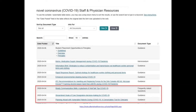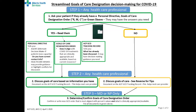Here is an example of a tool developed in Alberta. Simply ask your patient if they have a personal directive or goals of care designation in their green sleeve. If yes, review it — just because they have one doesn't mean they want it to be the same as before, so there is always room for a new conversation. The algorithm gives guidance on discussing goals of care based on the information you have.